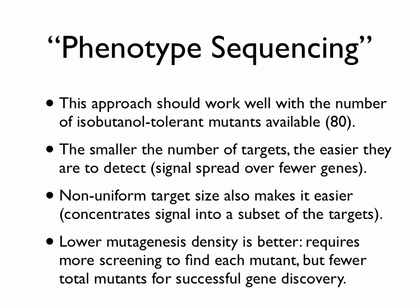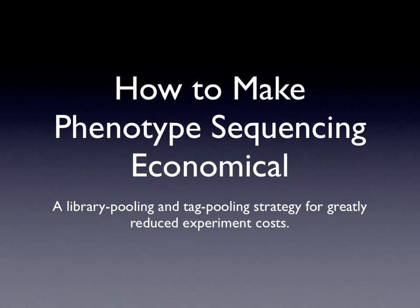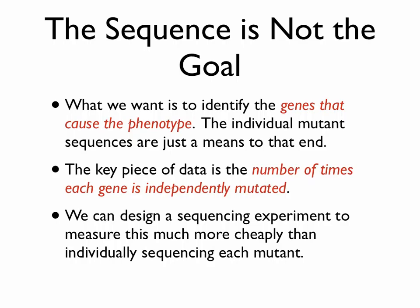We proposed this to Jim's lab as a standardized analysis — it's better to tune your mutagenesis density before going in. We also wanted to use the computational analysis to optimize the costs of these experiments. An obvious point: if the goal is to discover the genetic causes of a phenotype, the actual sequence of individual mutant strains is secondary. The primary piece of information that matters is simply the number of times each gene is independently hit in the total set of independently generated strains.